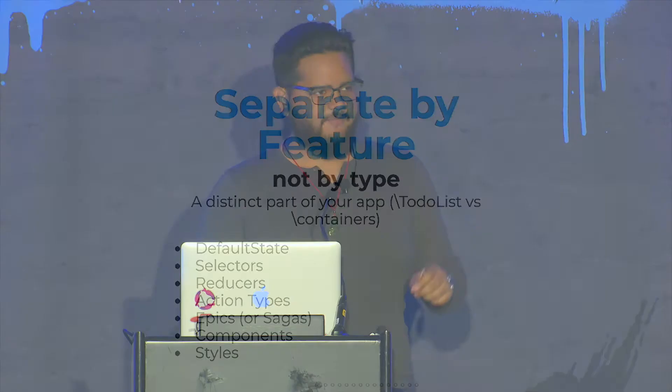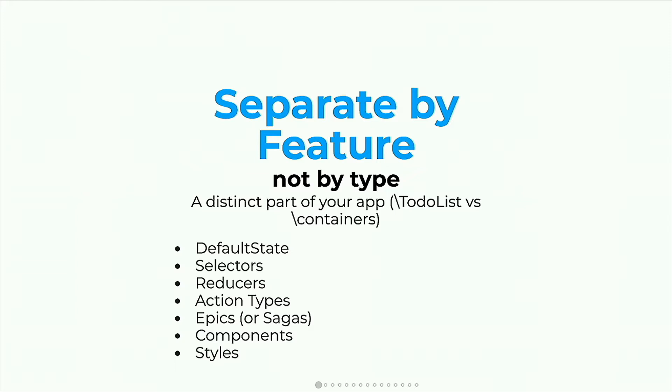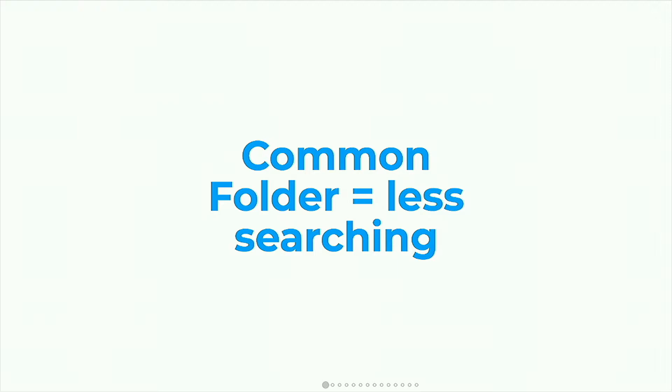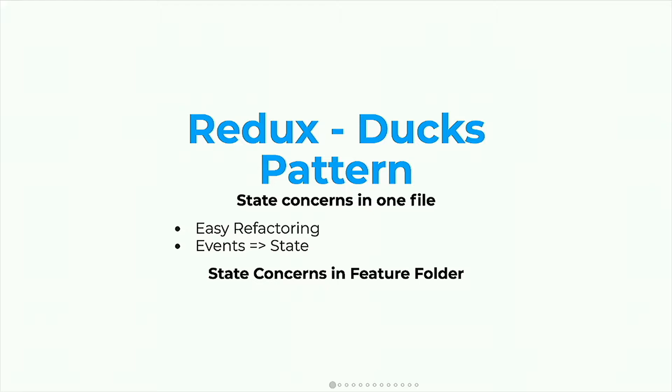It makes it super easy to change something about your app. You look at your app, you see what feature that falls into, look at your folder structure, and target that folder specifically. There's also a pattern called Redux Ducks — a pattern of keeping everything related to your Redux app in one single file. You declare your types at the top, your action creators below that, your state and reducers below that. I use something very similar, except I factor out my Redux Epics into a separate file because those can get quite large. But everything that has to do with your state is one file, making it really easy to change things like action types and see how those types relate to state changes. Whenever you need to refactor something, it's all there in one place.